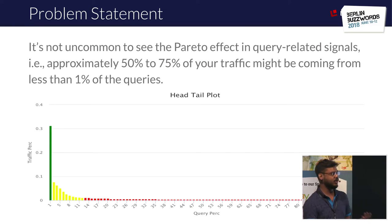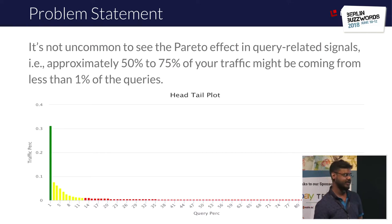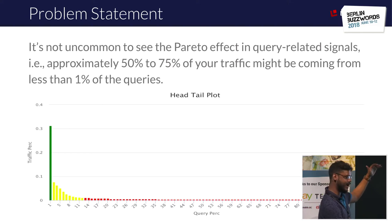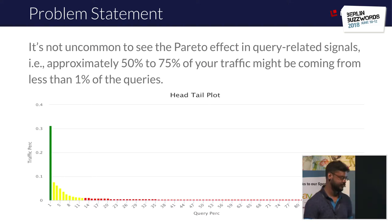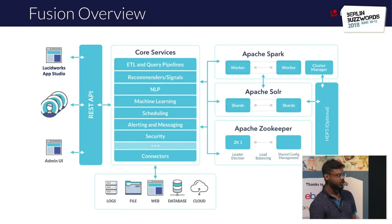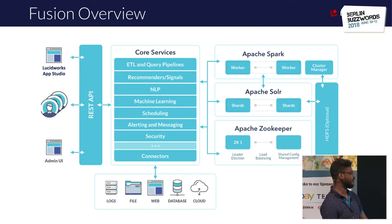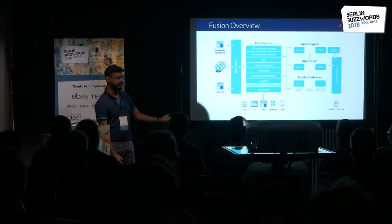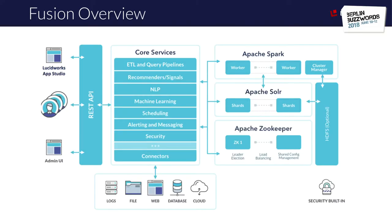It's not uncommon to see the Pareto effect on query-related signals — user events. Out of the total unique queries received, a very small percentage, maybe one or two percent, gets more traffic than others. Plotting traffic percentage against query percentage reveals a very big head, a moderate torso, and a long tail. All examples and solutions discussed here are based on Lucidworks Fusion 4.0, which uses Apache Solr for search, Apache ZooKeeper for resource management, Spark for aggregations, core ML services, NLP, connectors, and a REST API.